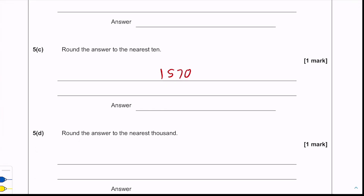For the final question, round the answer to the nearest thousand. We need to look at the hundreds column and it's five or above, so we round up to get 2,000.